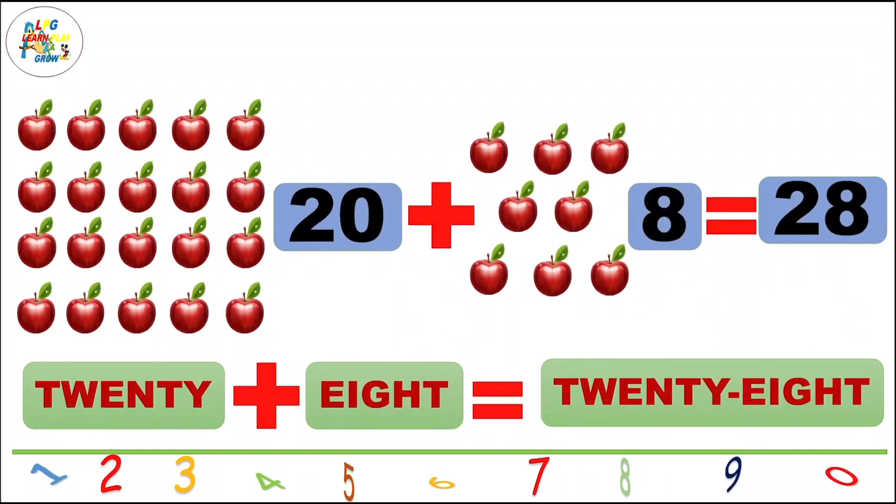20 plus 8 is equal to 28. Learn the spelling of 28: T-W-E-N-T-Y, twenty, E-I-G-H-T, eight. Once more: T-W-E-N-T-Y, twenty, E-I-G-H-T, eight. 28.